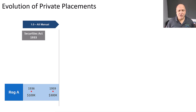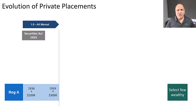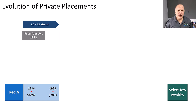Back then, you could raise up to $100,000 initially, then they increased that to $300,000. And under Reg A, you could raise money without going public. Because of the lack of technology at the time and limited exemptions, the activity was limited to a select few wealthy individuals.